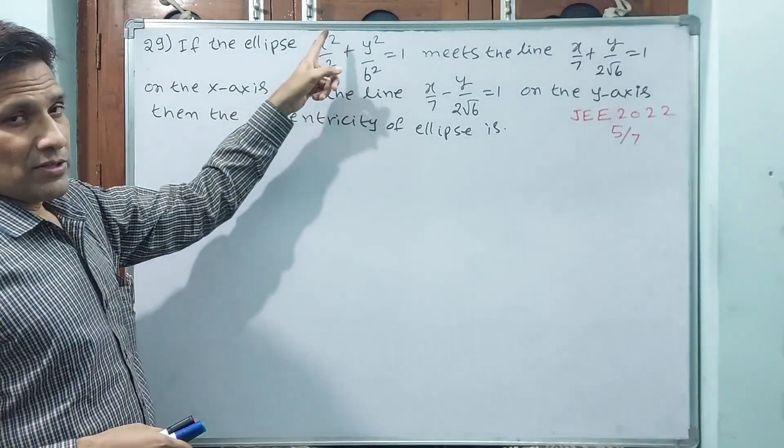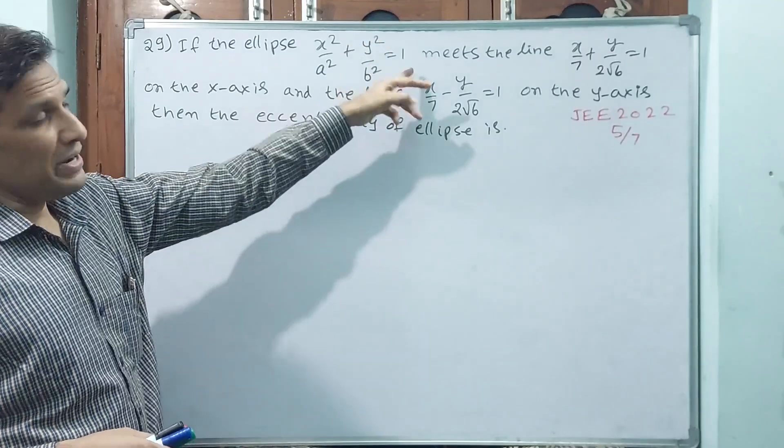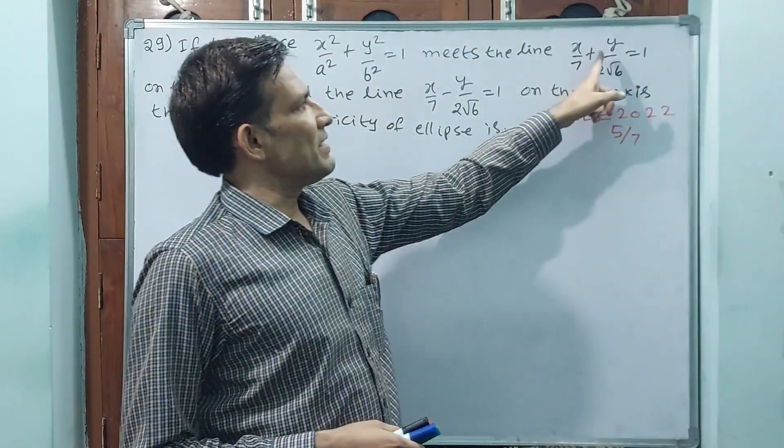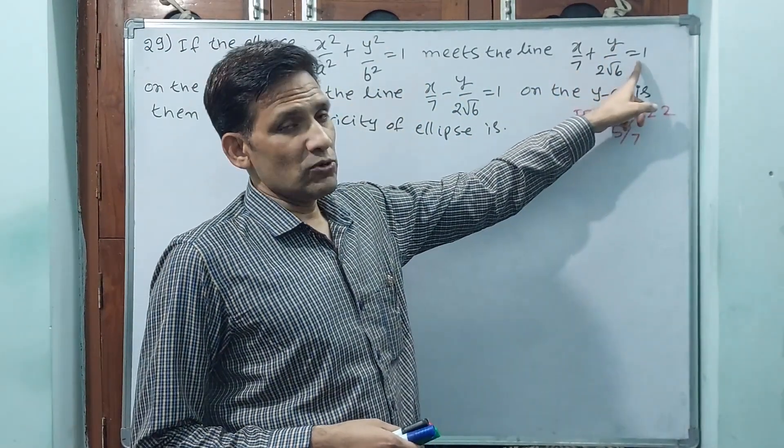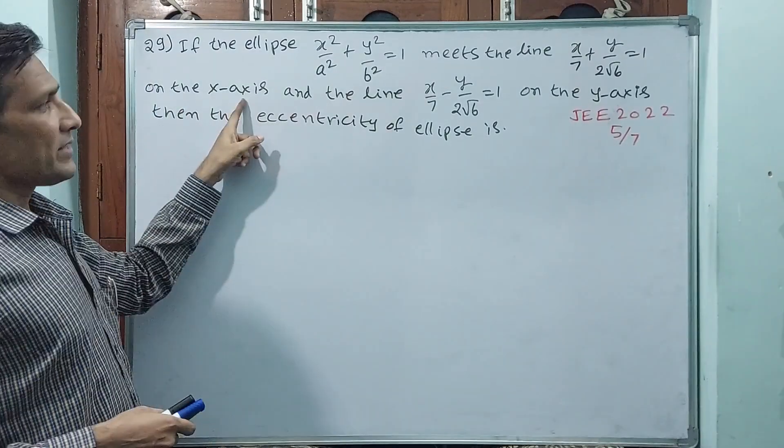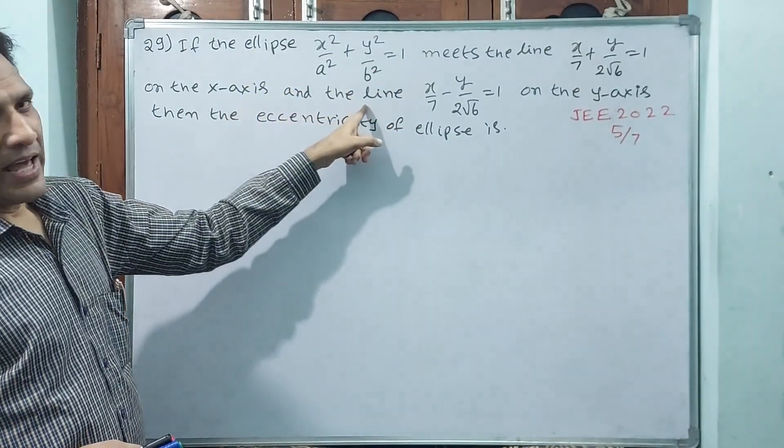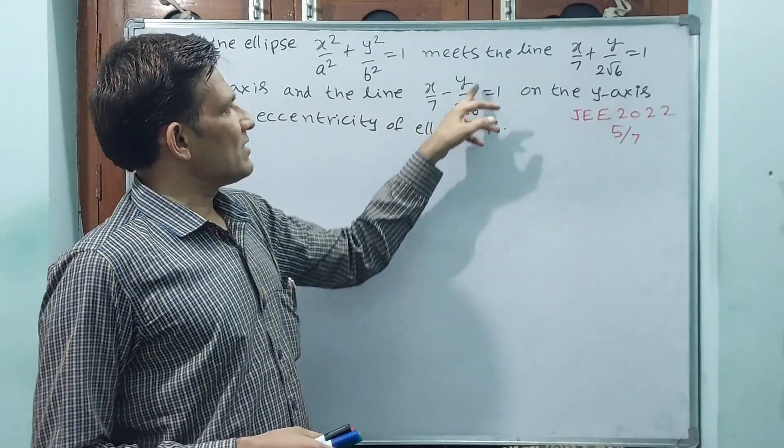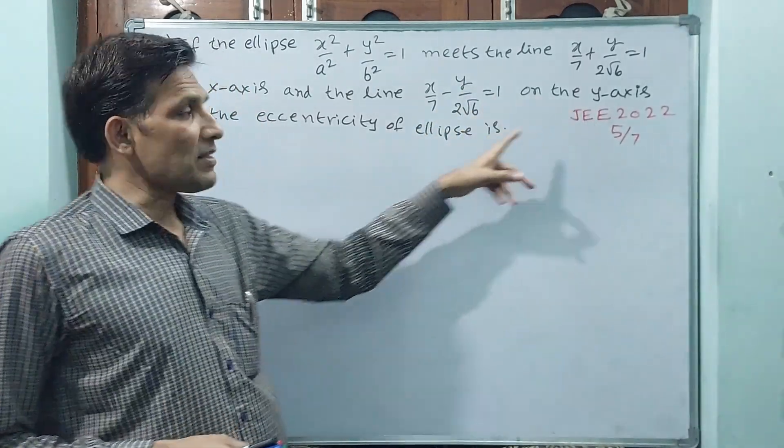If the ellipse x²/a² + y²/b² = 1 meets the line x/7 + y/(2√6) = 1 on the x-axis and the line x/7 - y/(2√6) = 1 on the y-axis, then the eccentricity of the ellipse is how much?